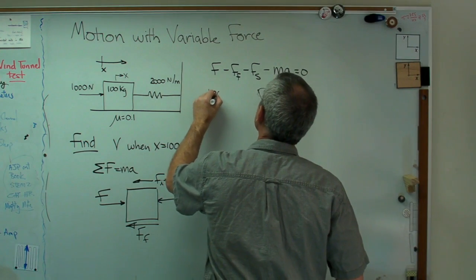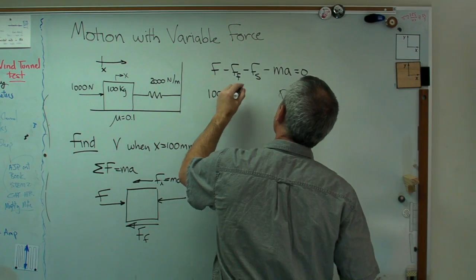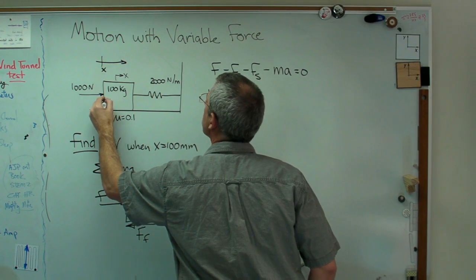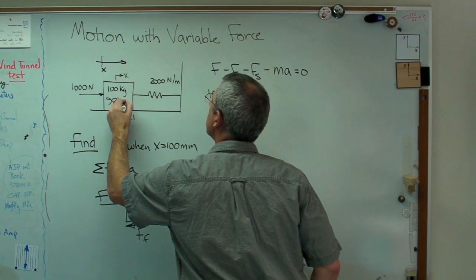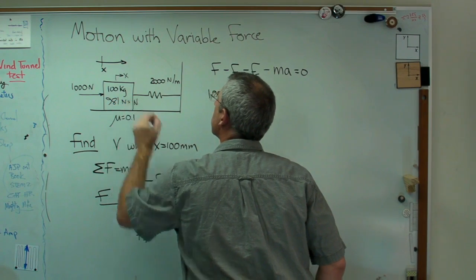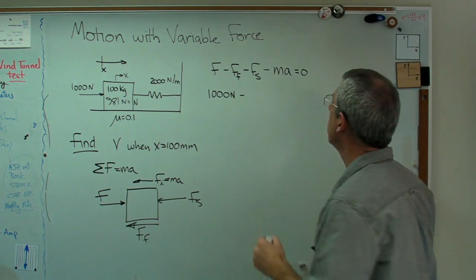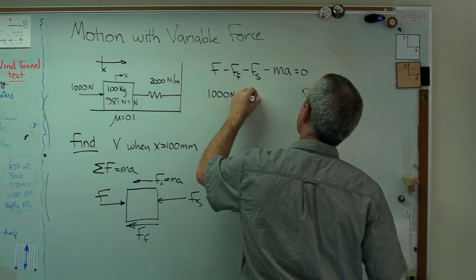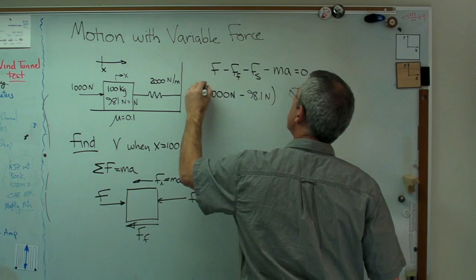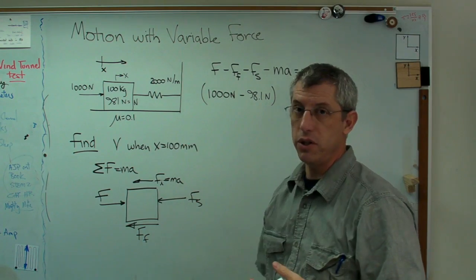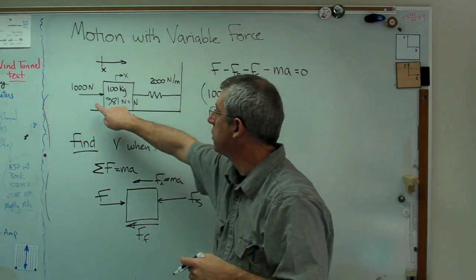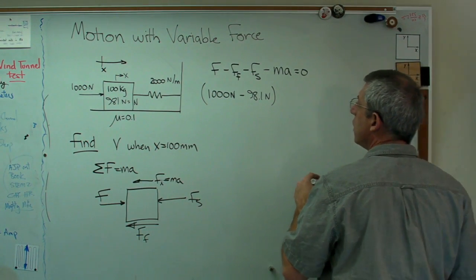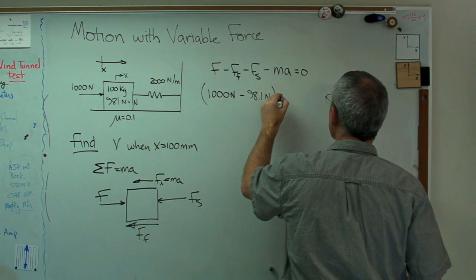So let's see. That's 1,000 newtons. Minus. Now this is going to be mu n. And the normal force here is 981 newtons. And there equals n. That's the weight. So times 0.1. I'm going to get 98.1 newtons. And that's just a constant. Notice that that friction doesn't change. So that number doesn't change. All the friction does is just reduce the amount of that external force that's being used to move the block.